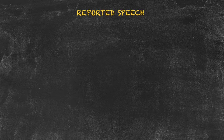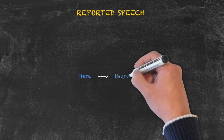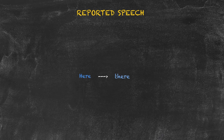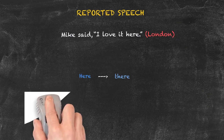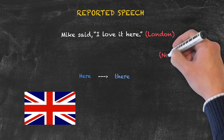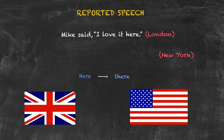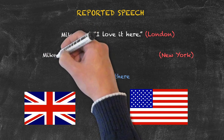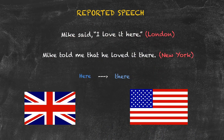Let's begin our examination of backshifting our words by looking at our places. Imagine for a moment I have a friend named Mike, and Mike has moved to London. I've asked Mike what he thinks of London, and his direct quote is 'I love it here.' However, I'm going to report Mike's speech to a mutual friend in New York. It wouldn't make much sense to say 'Mike loved it here' — I'm in New York, but we're talking about London — so we change 'here' to 'there.' The result is: Mike told me that he loved it there.